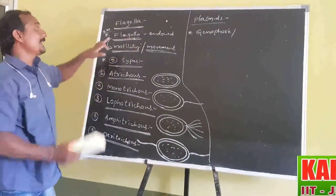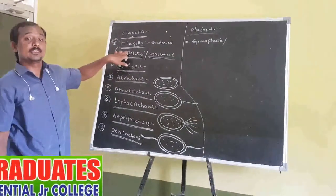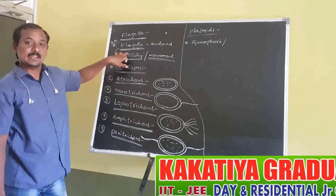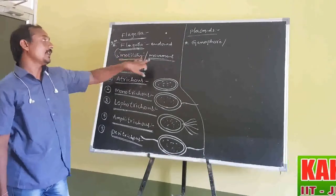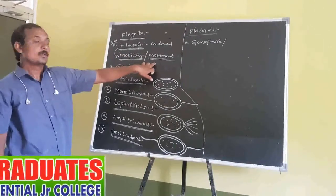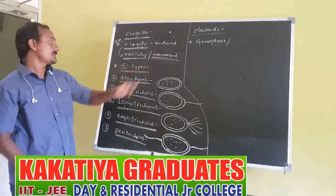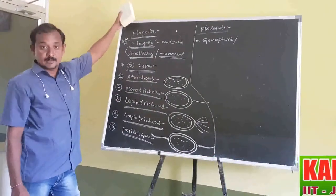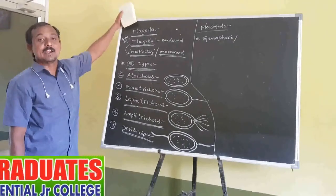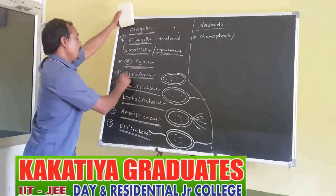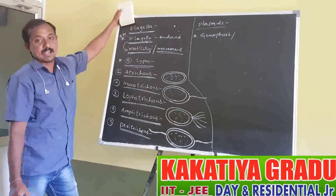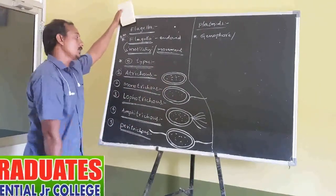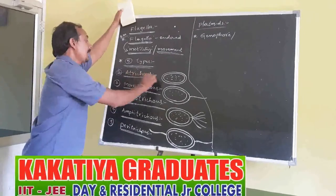Bacterial cells are endowed with Flagella. Due to the presence of Flagella, it involves motility or movement from one place to another. Depending upon the number of Flagella, bacterium cells are divided into five types. The first one is Atrichous — bacteria without Flagella are called Atrichous.